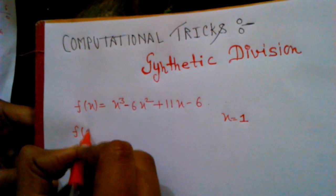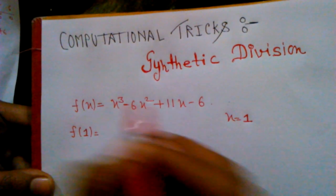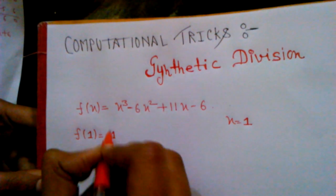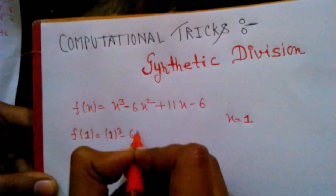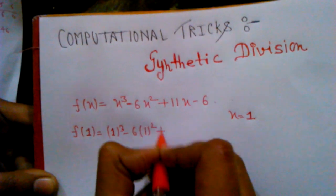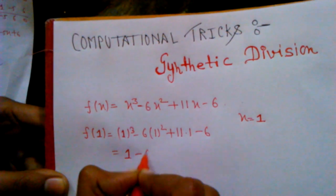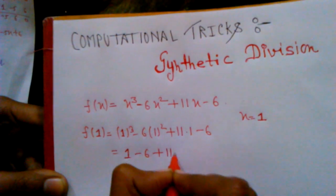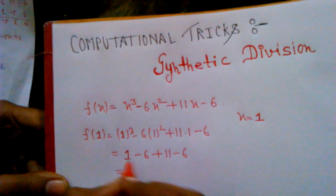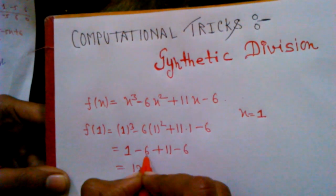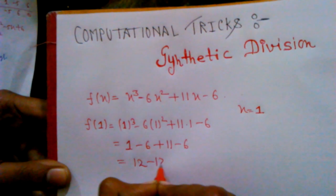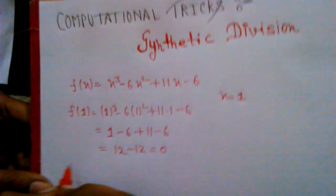Then f(1) is equal to, x equal to 1, that is 1³ - 6(1²) + 11(1) - 6. That is 1 - 6 + 11 - 6. That is 1 + 11, that is 12 - 6 - 6, that is -12, that is equal to 0.